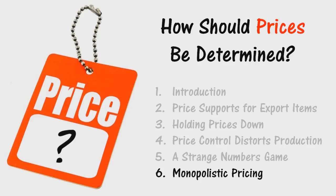Yet anti-trust policy in the United States at least assumes that the courts can know how much an alleged monopoly or conspiracy price is above the competitive price that might have been. For when there is an alleged conspiracy to fix prices, purchasers are encouraged to sue to recover three times the amount they were allegedly forced to overpay. Our analysis leads us to the conclusion that governments should refrain wherever possible from trying to fix either maximum or minimum prices for anything.